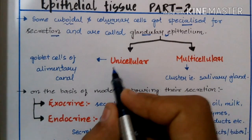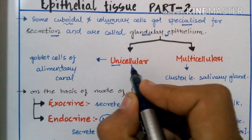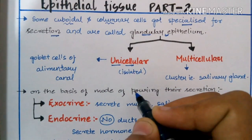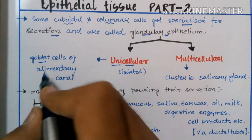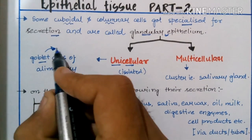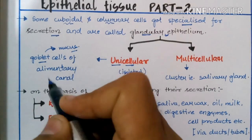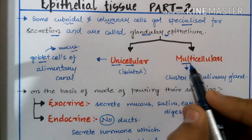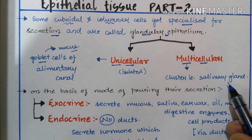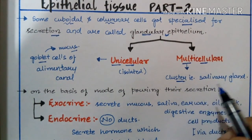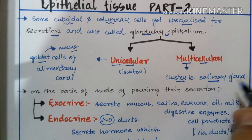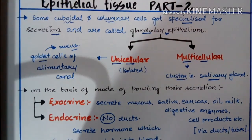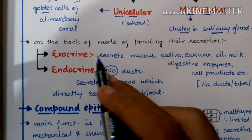A unicellular gland contains only one isolated cell. For example, goblet cells of the alimentary canal, which usually secrete mucus. Multicellular glands contain more than one cell — a cluster of cells. For example, salivary glands are a kind of multicellular gland formed from the interaction of different kinds of cells.